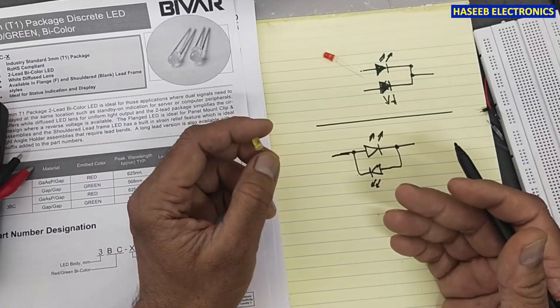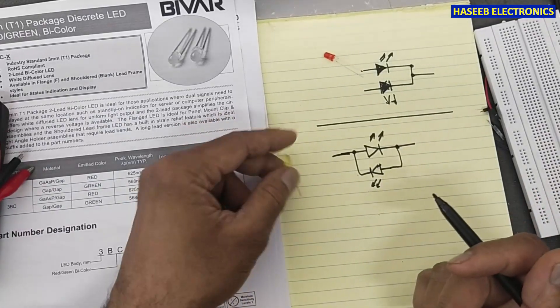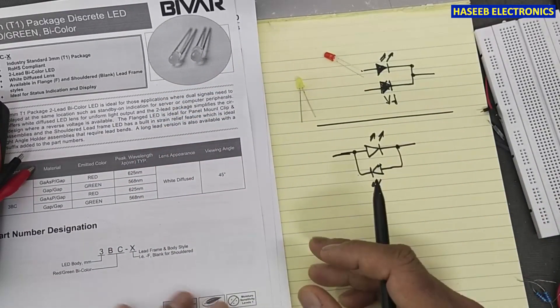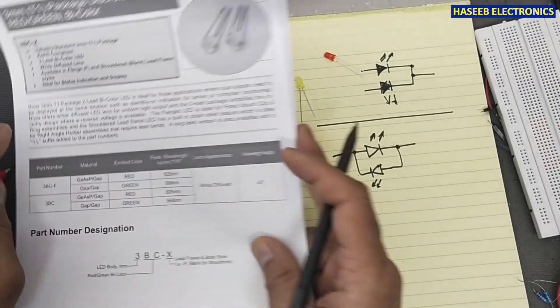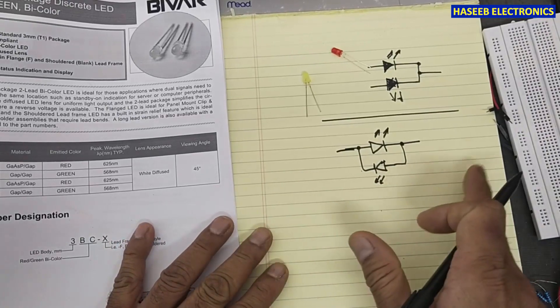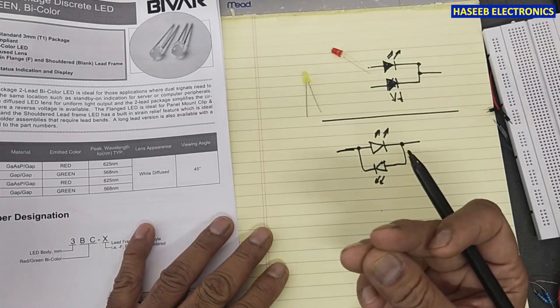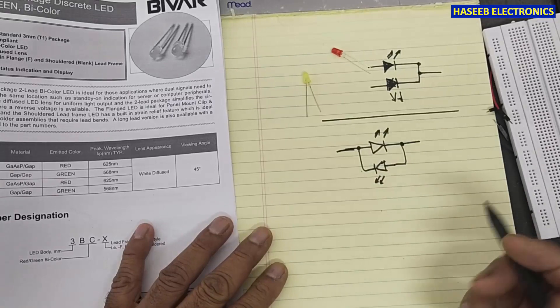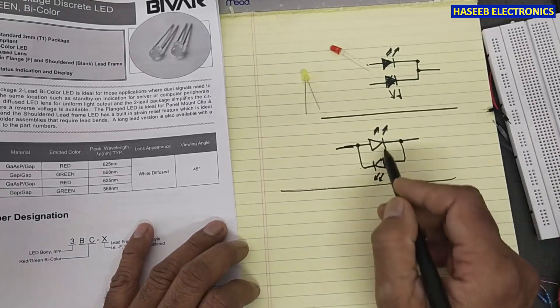When there is bus monitoring for read-write function, for data flow, either data is coming outside or inside, basically it is a voltage level difference. How is this LED used in the circuit?